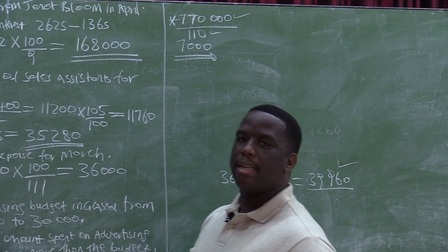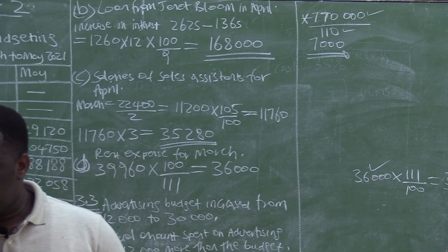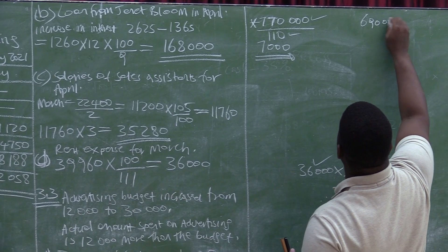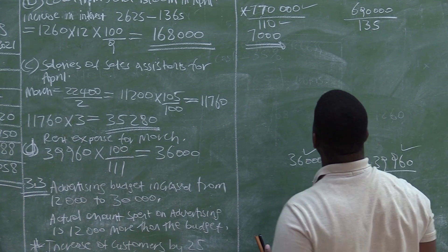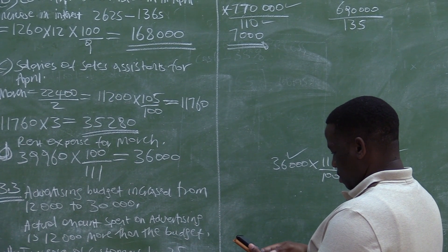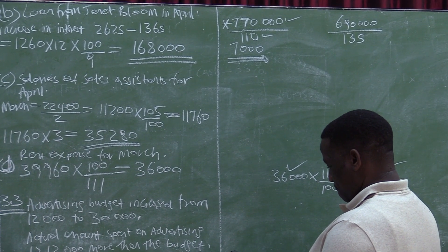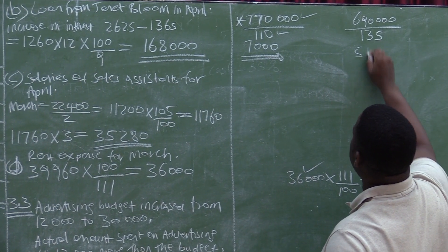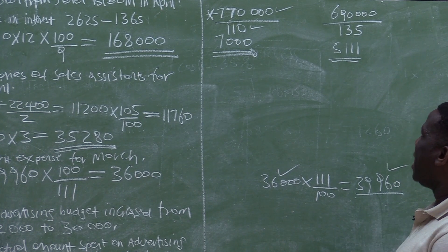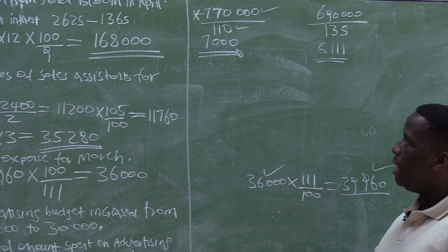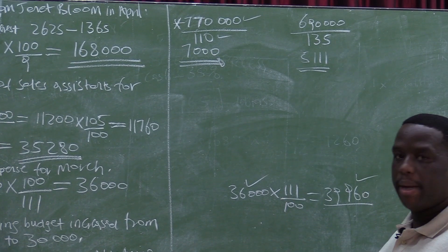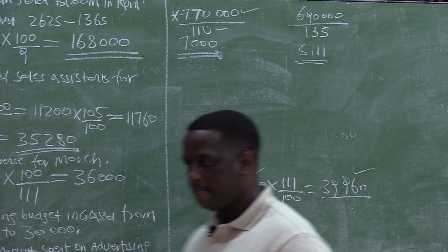But with the decline in the national economy, sales went down to $690,000 and the number of customers is 135. So $690,000 divided by 135 equals $5,111. Even though the number of customers increased from 110 to 135, the average amount spent by each customer dropped from $7,000 to $5,111 due to the decline in the national economy.